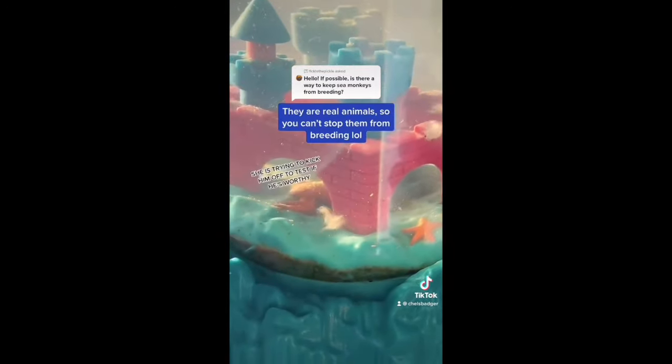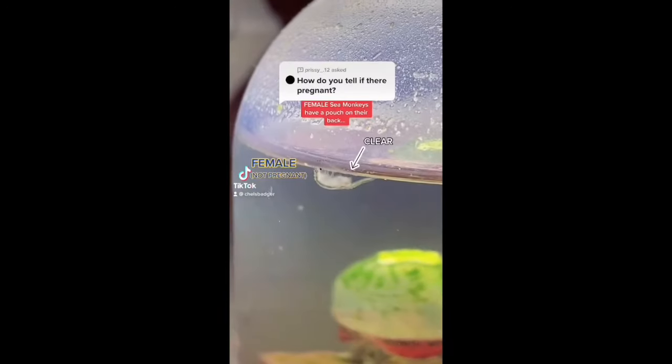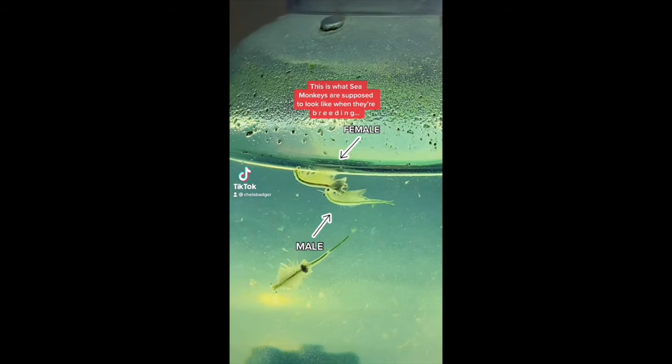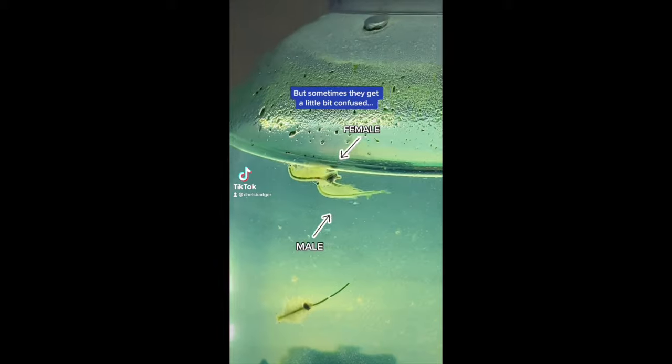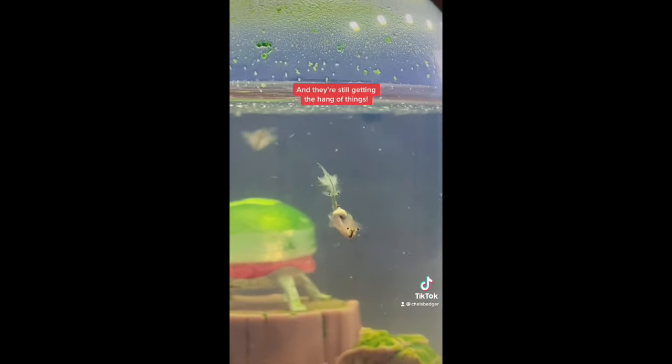Male sea monkeys have a pouch on their back that is clear when they aren't pregnant and dark when they are pregnant. This is what sea monkeys are supposed to look like when they're breeding, but sometimes they get a little bit confused and latch onto the wrong part of the female. This usually happens when male sea monkeys are teenagers and they're still getting the hang of things.